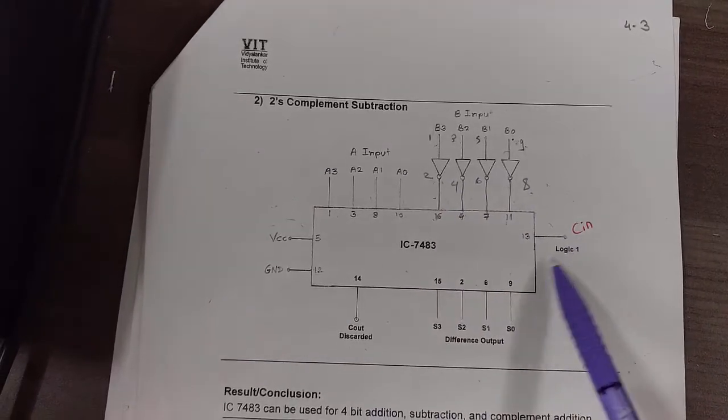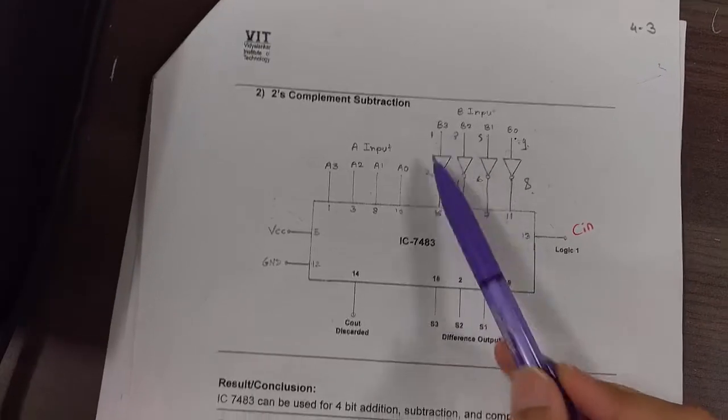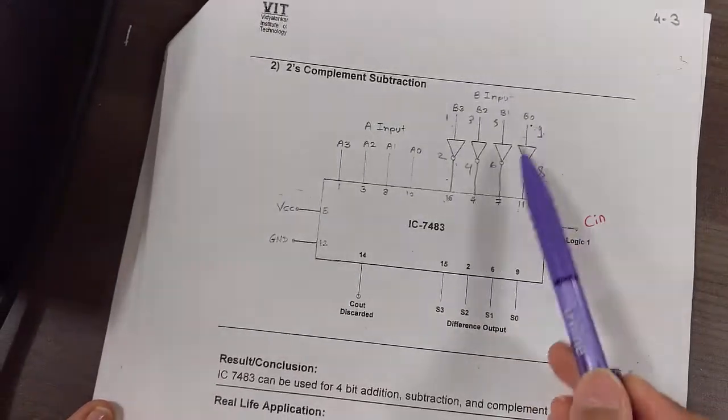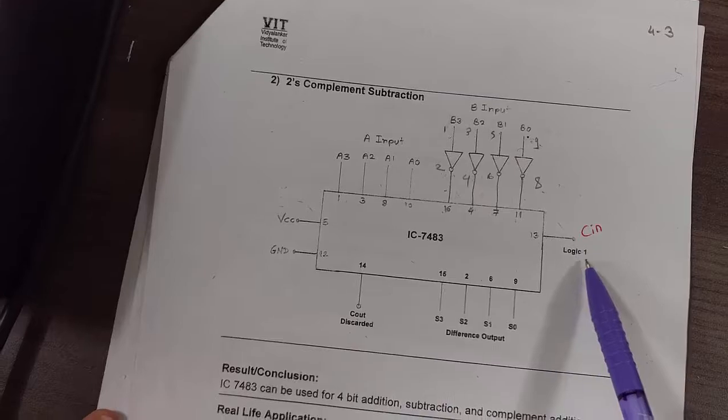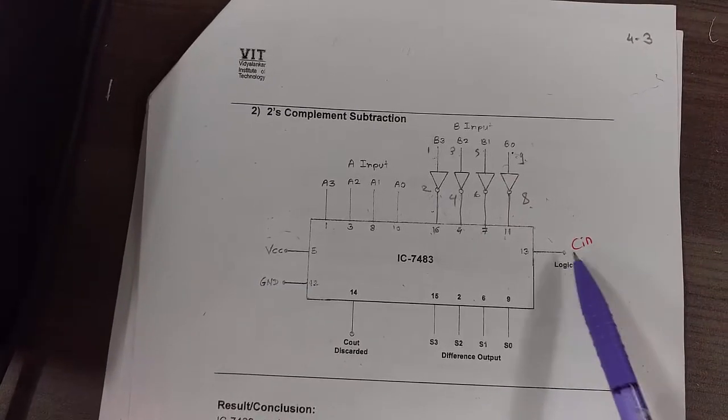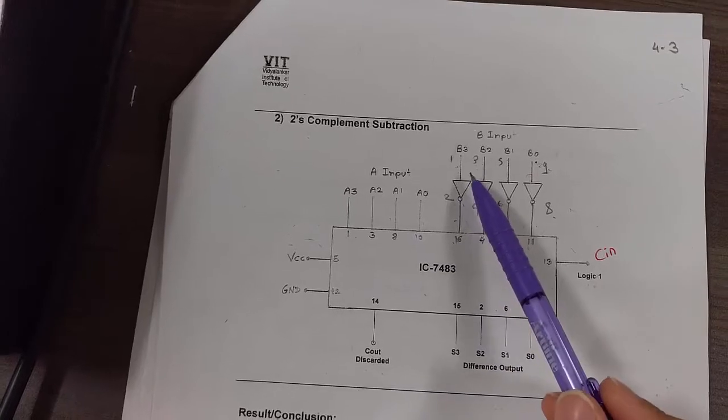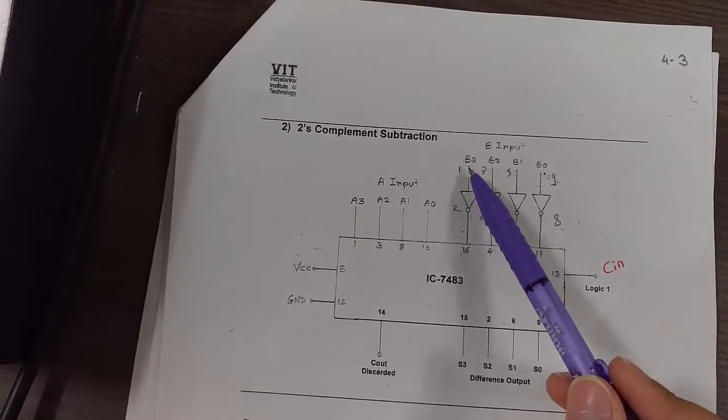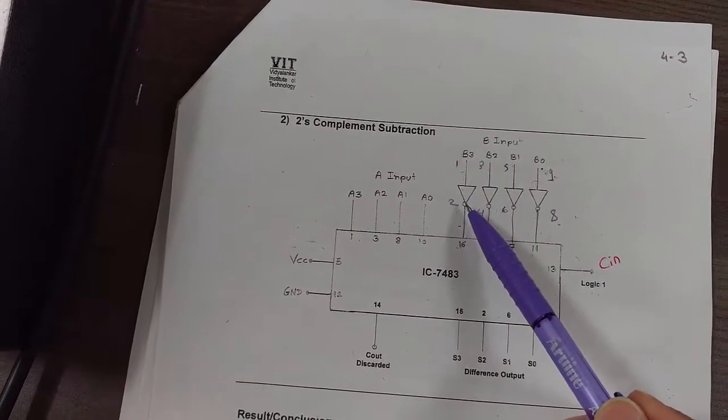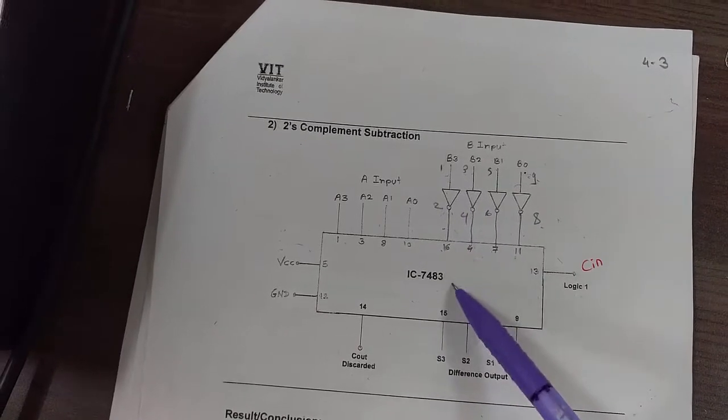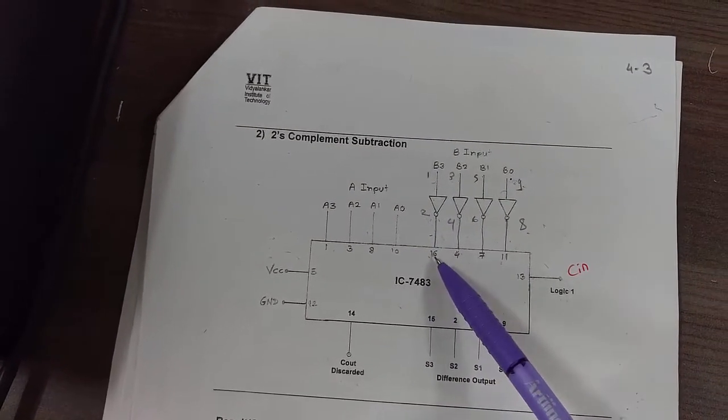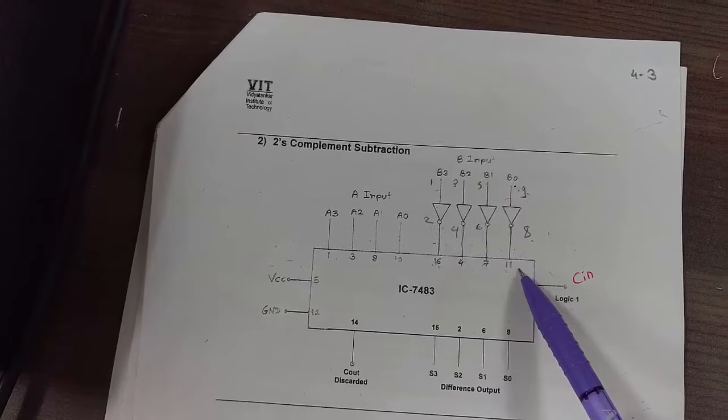This is known as 2's complement. And for that we are using NOT gate and the CN is made logic 1. That is, first the complement of B3, B2, B1, B0 is taken and then it is added with logic 1, that is CN, and therefore we get 2's complement. The connections are: NOT gate input is given to pin number 1 and then output 2 is connected to the adder IC7483's 16th pin, and similarly the other pins are connected.